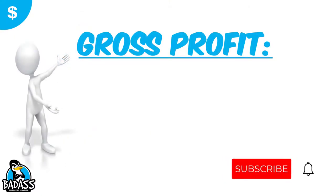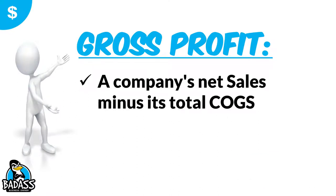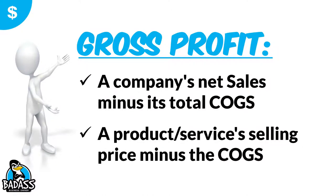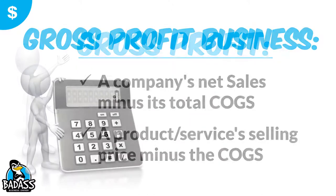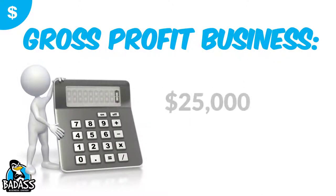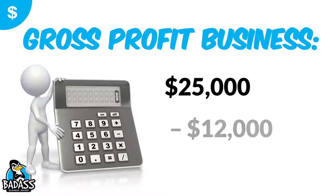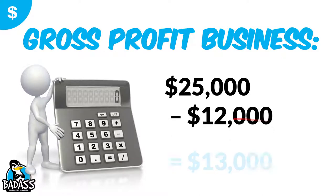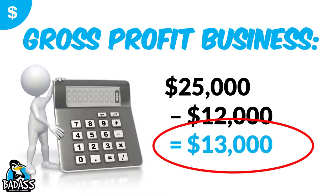Gross profit can relate to two different things. One is the company's net sales minus its total cost of goods — so you have the big rollup for the month, for the year, the quarter, whichever way you're looking at it. You also can look at it all the way down to a product or service — it's the same thing: the sales price minus the cost of goods. For example, if a business did $25,000 in the month and their cost of goods were $12,000, that leaves $13,000 for the gross profit before expenses.